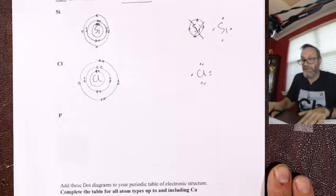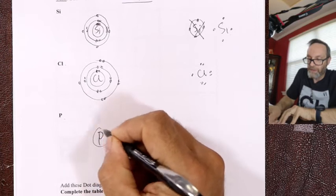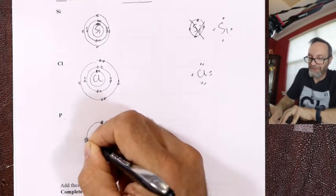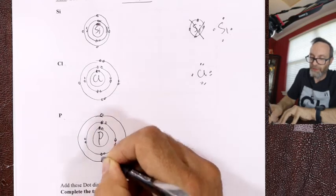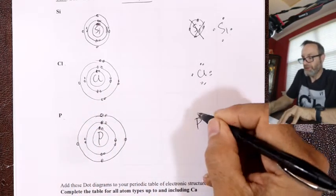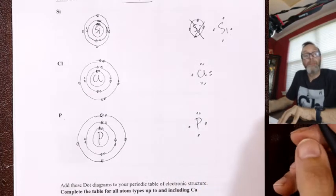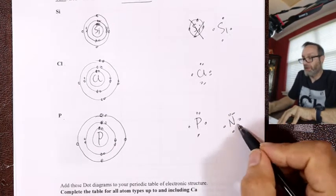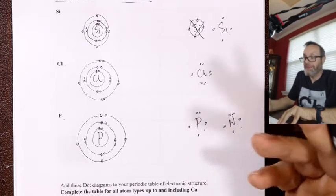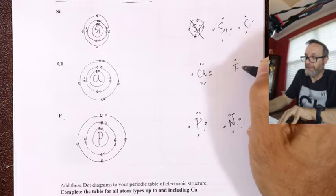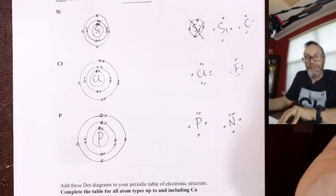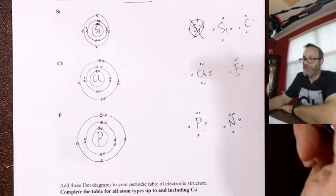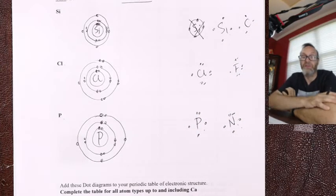Phosphorus is element number 15: 1 through 10 fills the first two layers; five more — 1, 2, 3, 4, 5 on the outside. Phosphorus and nitrogen are both in column five — so aside from the symbol being different, they have the same valence configuration. Column five, five on the outside. Things in the same column have identical valence: carbon, fluorine, things in the same column have the same chemistry because they have identical Lewis symbols and identical valence configurations.